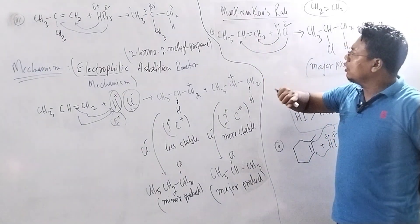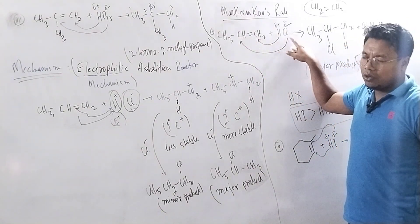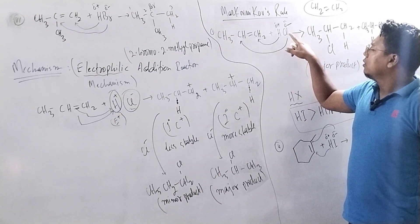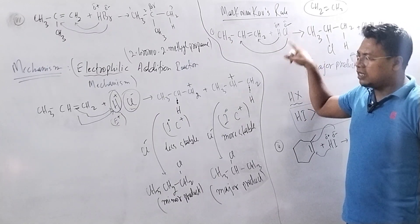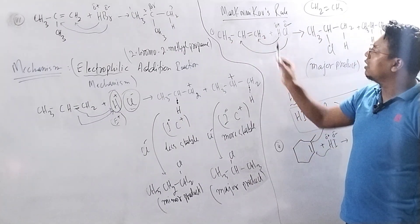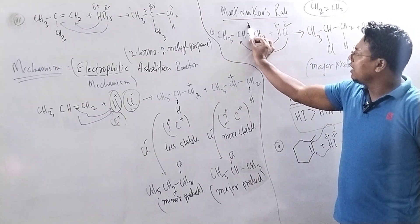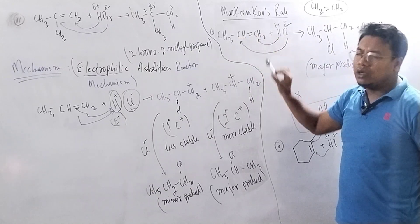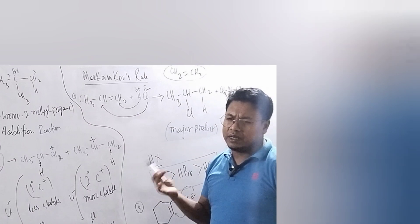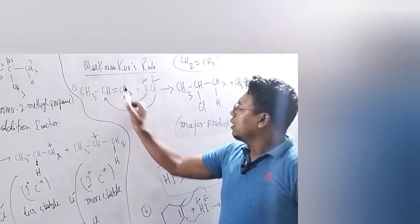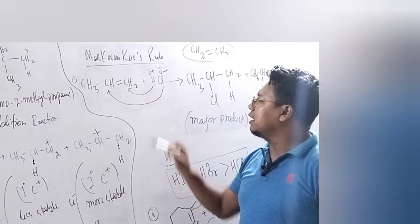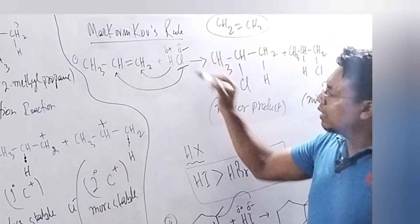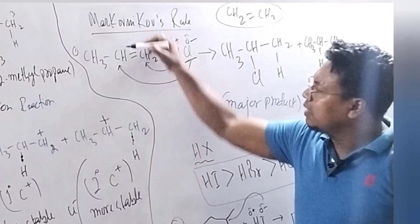So in Markovnikov's rule, I am taking the first example as HCl. When HCl is added to an unsymmetrical alkene — unsymmetrical alkene means when I divide it into two halves, the two halves are not symmetrical, they are not equal, they are not mirror images of each other.